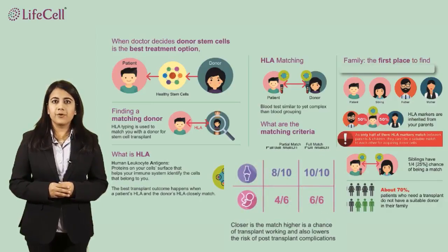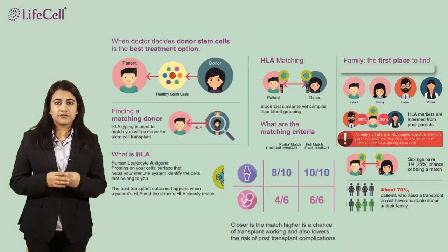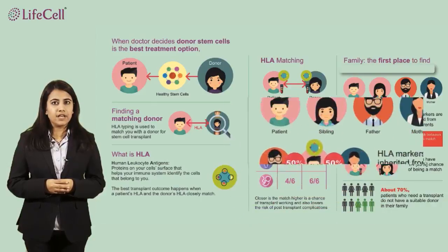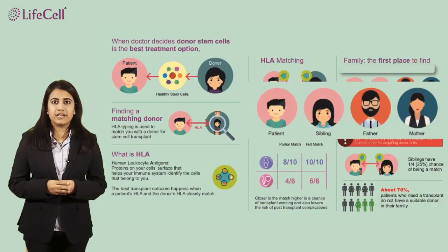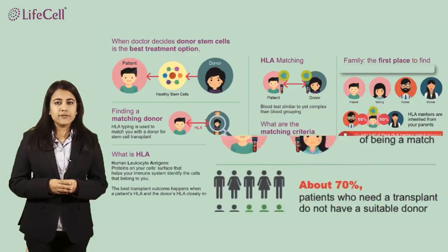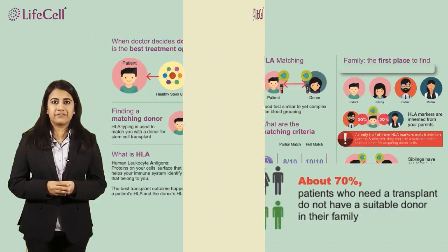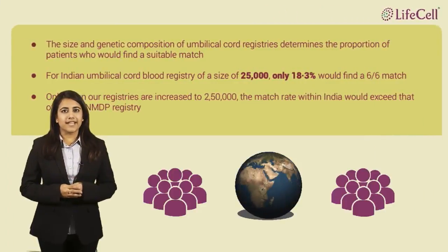The first option is to look for a donor within the family, and the possibility of finding a match within the family is only 30%. Seventy percent of the patients need to look for a suitable match outside the family. The number of donors available and the ethnicity of a donor directly correlates to the possibility of finding a match.